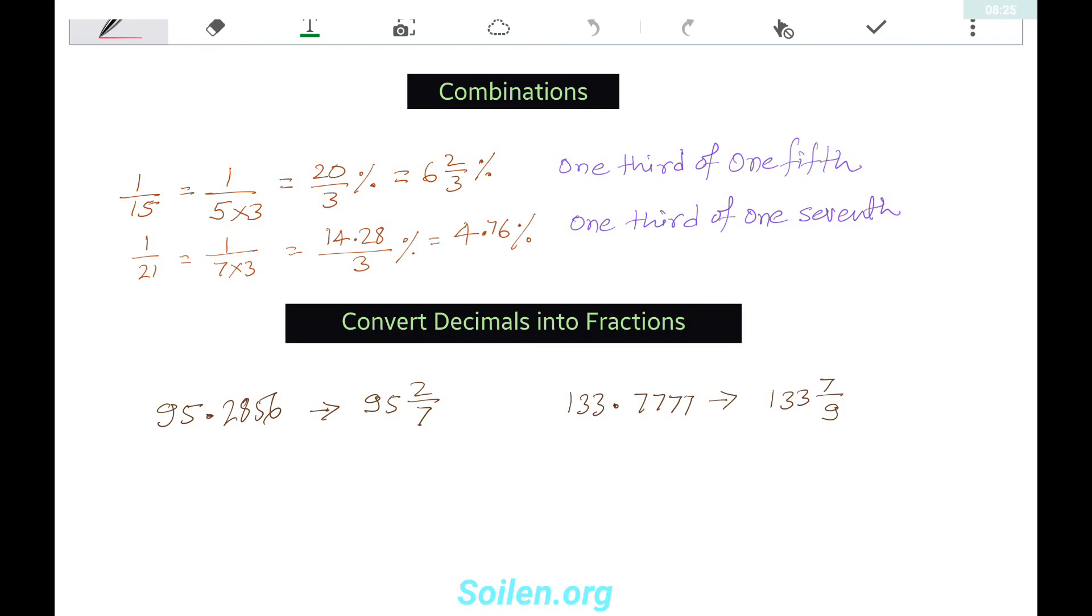Combinations. 1/15 is 1/3 of 1/5. We know 1/5 is 20 percent. Then 1/3 of 20 percent is 6 and 2/3 percent. Again, 1/21 is 1/3 of 1/7. So 1/7 is 14.28 percent, and 1/3 of 14.28 percent is 4.76 percent.